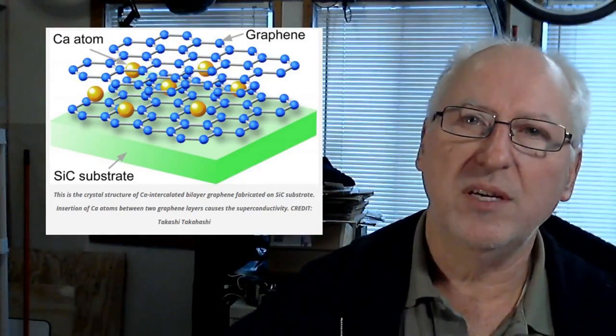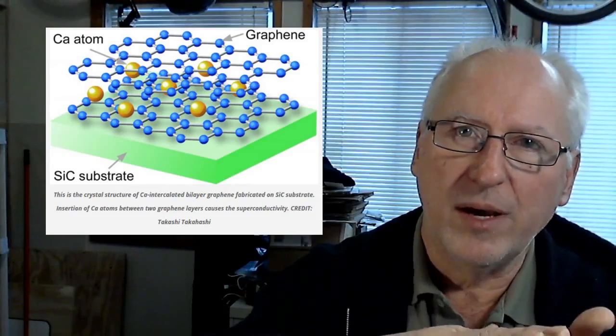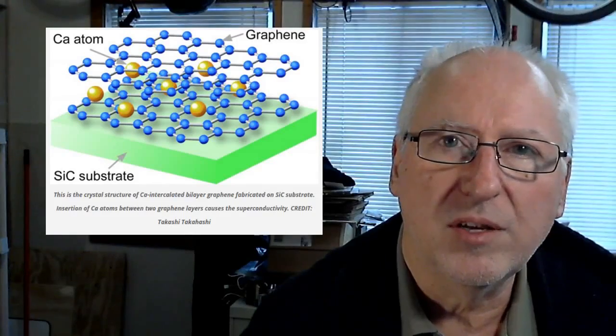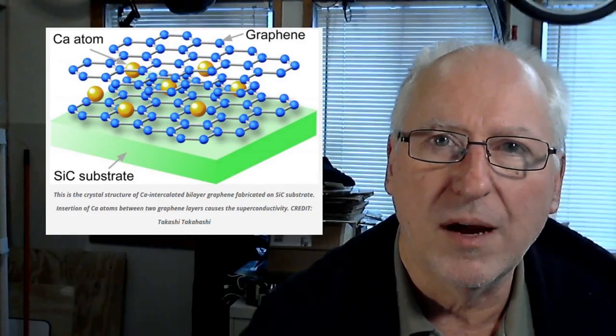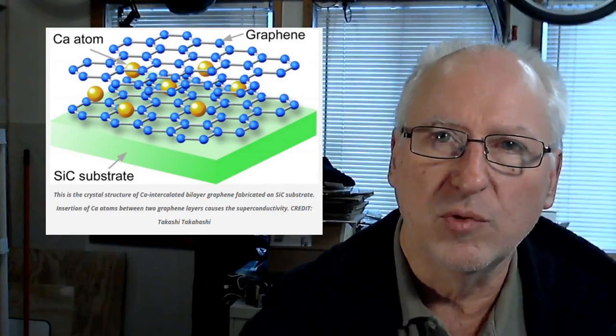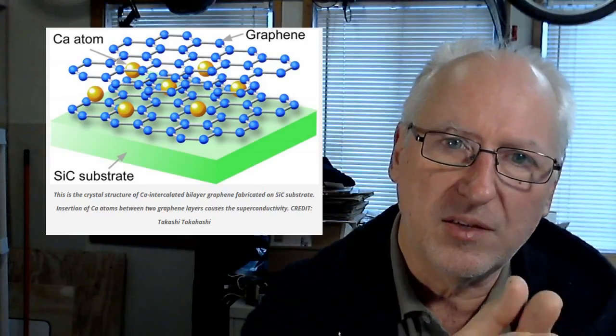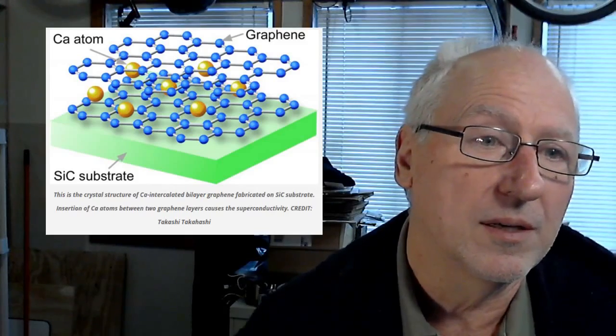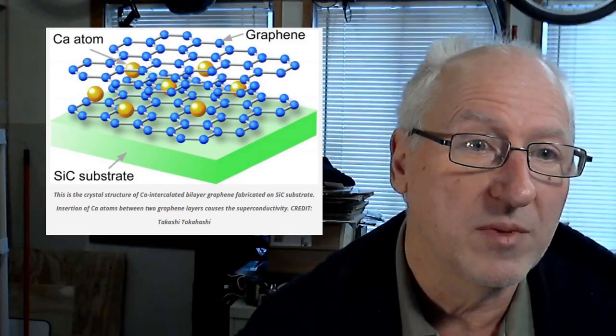So intercalated graphene is simply independent layers that have been separated by another material in between. Most oftentimes the intercalation is used for exfoliating graphene into its individual layers. In this case, they're leaving it intercalated for the application. Kind of interesting, and sort of up my alley for experimentation.